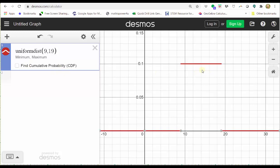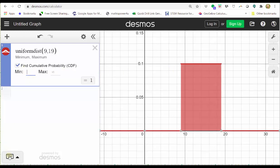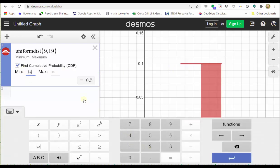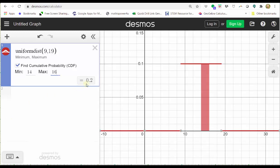To find the probability that X is greater than 14 and less than 16, click find cumulative probability, enter a min of 14, a max of 16. Close the Desmos keypad. We can see we get 0.2.